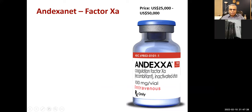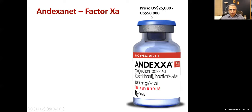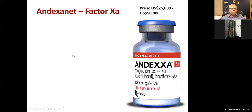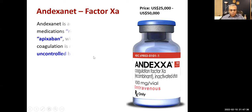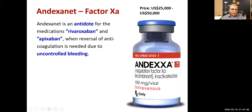There is a reversal agent for rivaroxaban and apixaban — andexanet alfa — which costs $25,000 to $50,000. It is an antidote when reversal of anticoagulation is needed due to uncontrolled bleeding. It is not useful for other factor Xa inhibitors; it is given intravenously. Side effects include pneumonia, infections, serious blood clots, and cardiac effects including cardiac arrest.